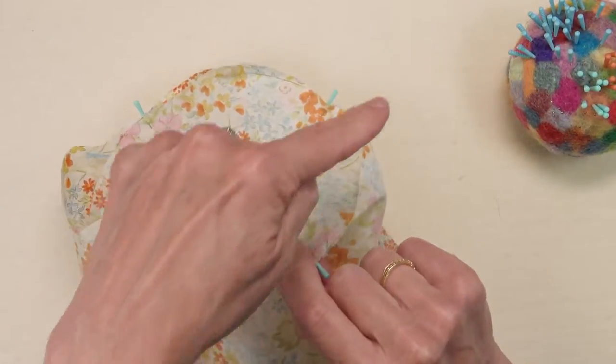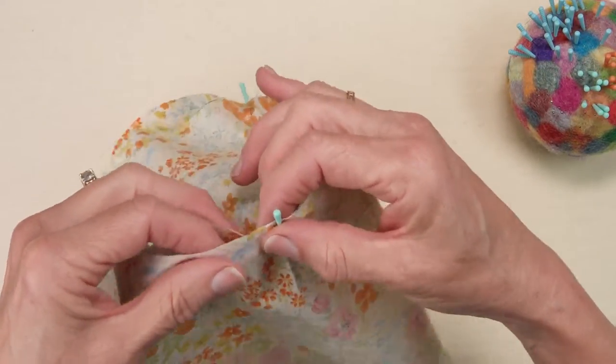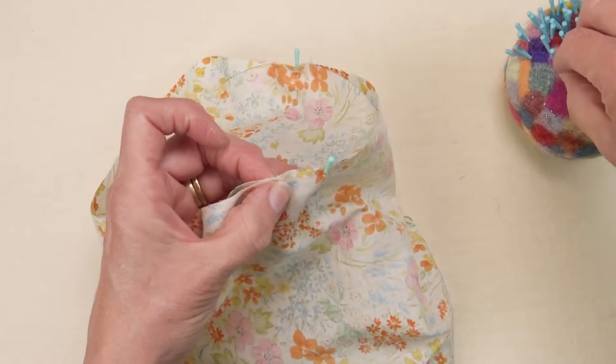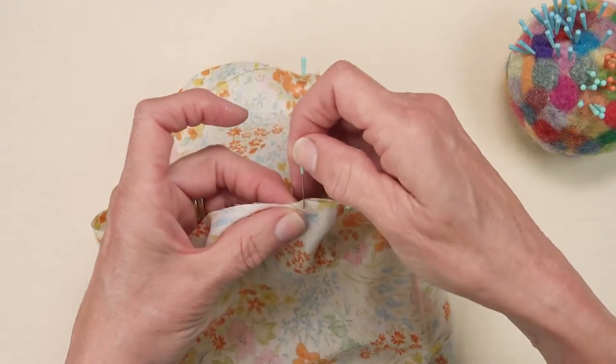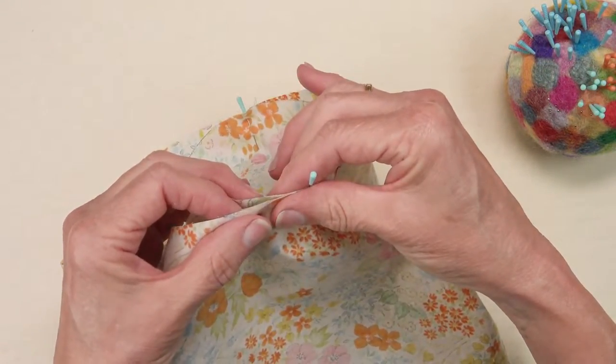When you've got the four compass points pinned begin working maybe three quarters of an inch to an inch at a time working around each quarter circle.